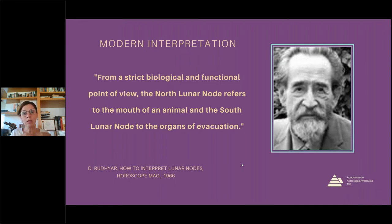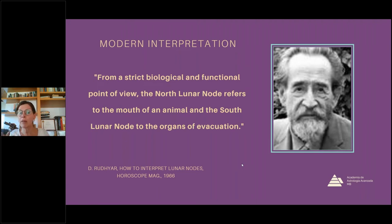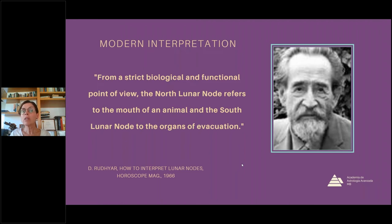So that's the traditional way of looking at the nodes: south node, things decrease, it's of a malefic nature; north node, things increase, it's of a benefic nature. But in the last century, with the advent of psychological astrology, there arose different ways of looking at the nodes. For instance, Ebertin has a way of looking at the nodes that refers to relationships.